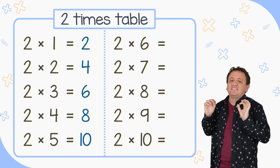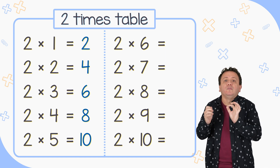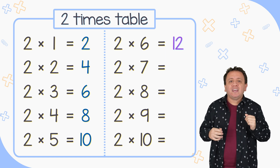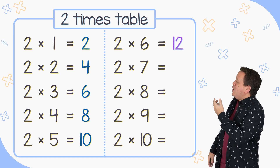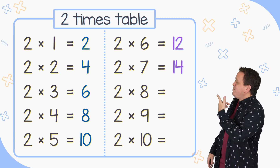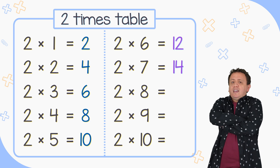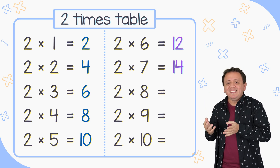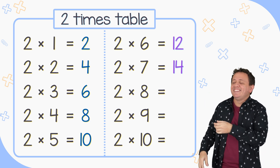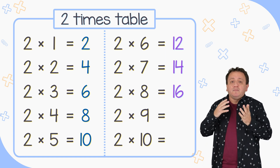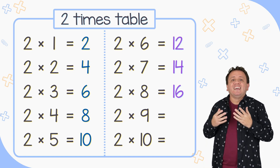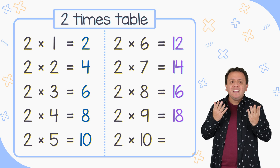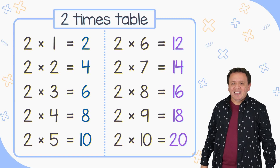We're going to jump to the next column. 2 times 6 is equal to 12. 2 times 7 equals 14. What is 2 times 8? 2 times 8 equals 16. 2 times 9 equals 18. And 2 times 10 equals 20.